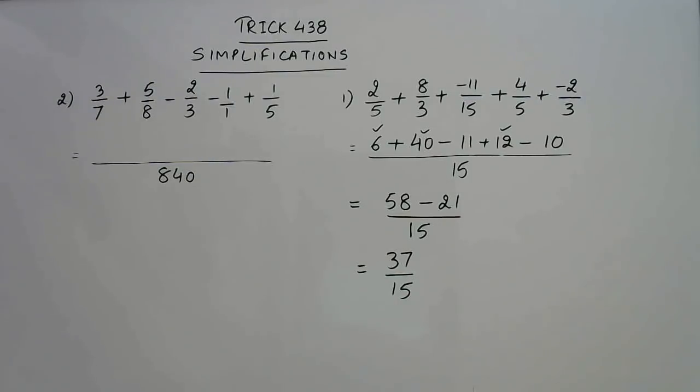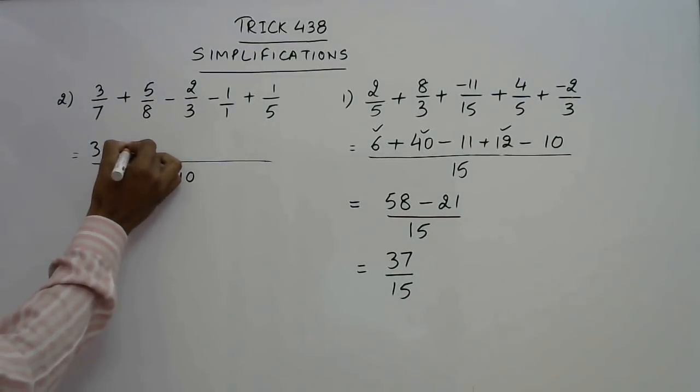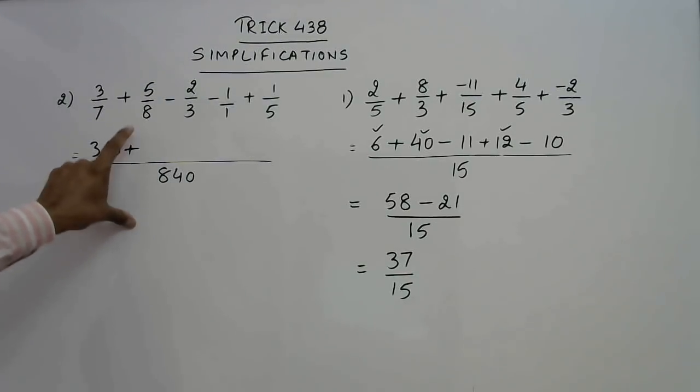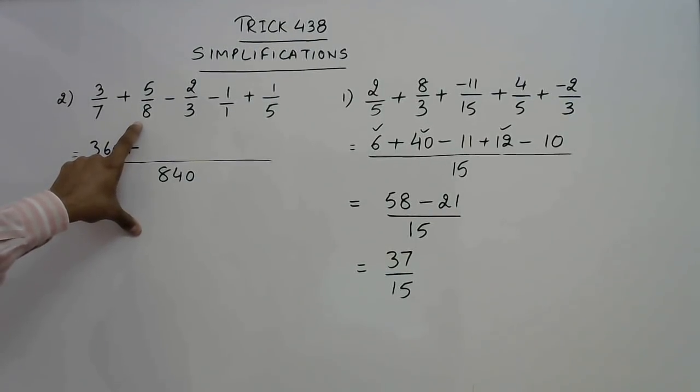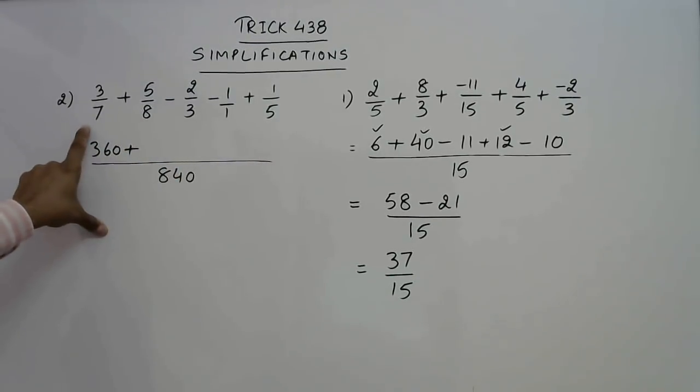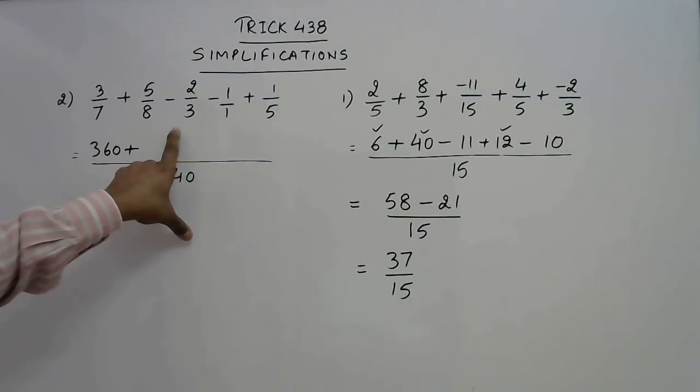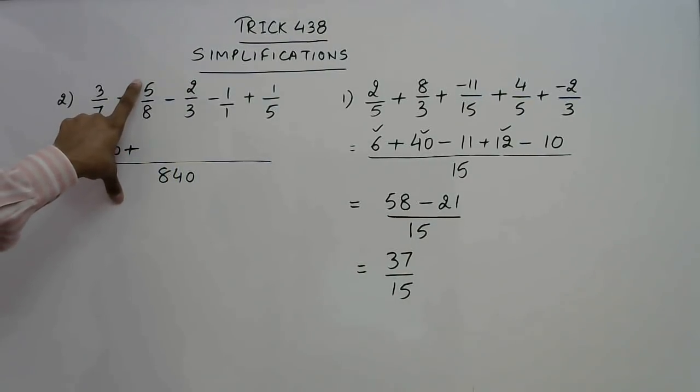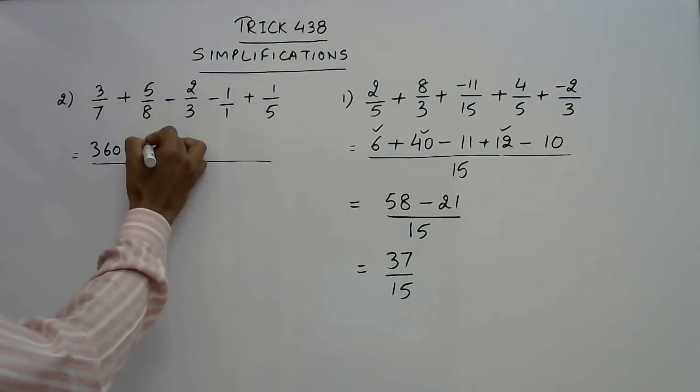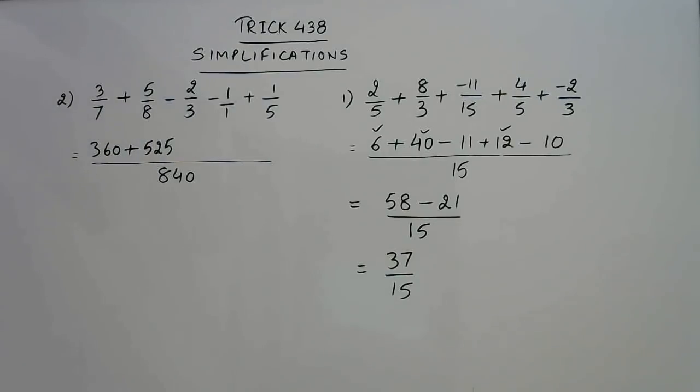So 120 into 3 is 360 plus now 840 has to be divided by 8. If you can divide it very easily. It is 105 but if you can't do it then multiply the remaining denominator. So this is 7 into 5, 35 into 3 again 105. So 105 into 5. So that comes to be 525. So I hope you have understood why we have obtained 525 here. I have divided 840 by 8 getting 105 and 105 is to be multiplied by 5. So that is 525.